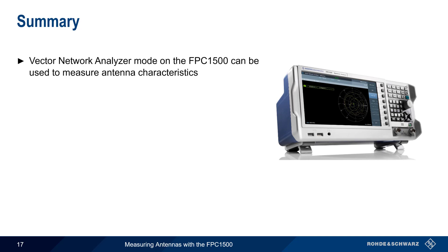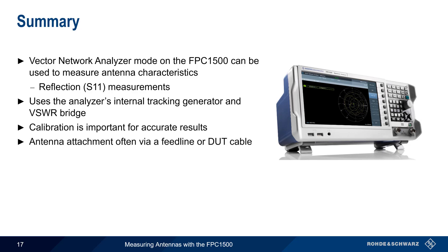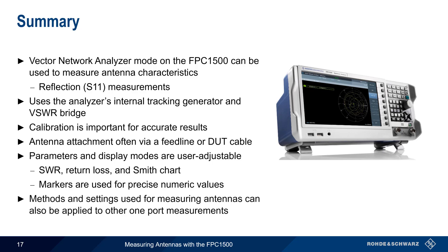Let's end with a brief summary. Vector Network Analyzer mode on the Rohde & Schwartz FPC-1500 spectrum analyzer can be used to measure antenna characteristics by performing reflection or S11 measurements. These are made using the analyzer's internal tracking generator and VSWR bridge, meaning that no external devices or accessories are needed. However, one-port calibration is needed before making measurements, requiring either manually attached calibration standards or an automatic calibration unit. Keep in mind that a feed line and/or DUT cable are often connected between the FPC and the antenna under test. Measurement parameters and display modes are user adjustable — the most common being standing wave ratio, return loss, and the Smith chart. Markers can be placed to obtain precise numeric measurements. Although this presentation has been focused on antenna measurements, the methods and settings used can often also be applied to other one-port devices.